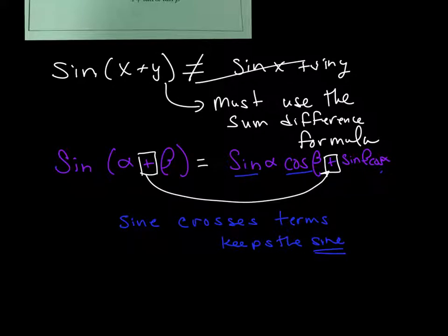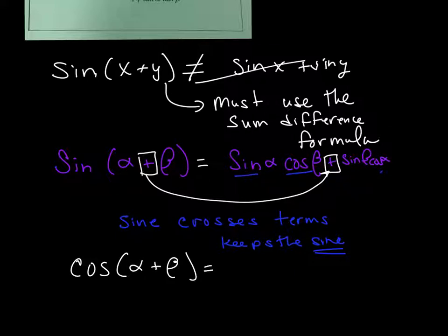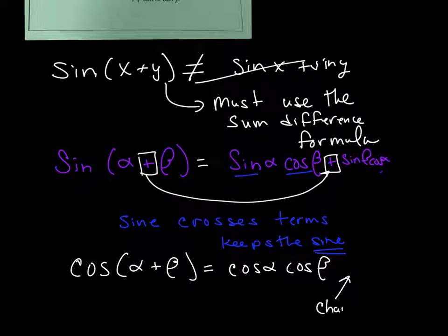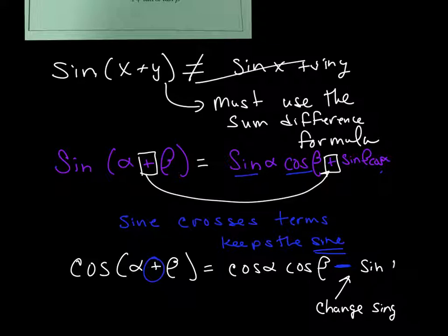For the cosine of (alpha + beta), it is cosine of alpha · cosine of beta, but then you change the sign. Because this was positive here, this becomes negative in between those two pieces. Then you use sine of alpha · sine of beta.